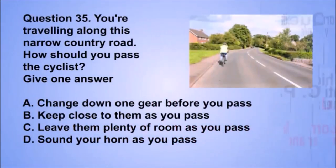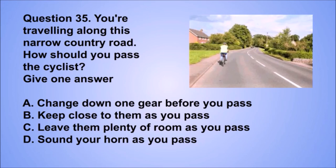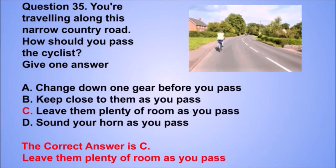Question 35. You're traveling along a narrow country road. How should you pass the cyclist? The correct answer is C: Leave them plenty of room as you pass.